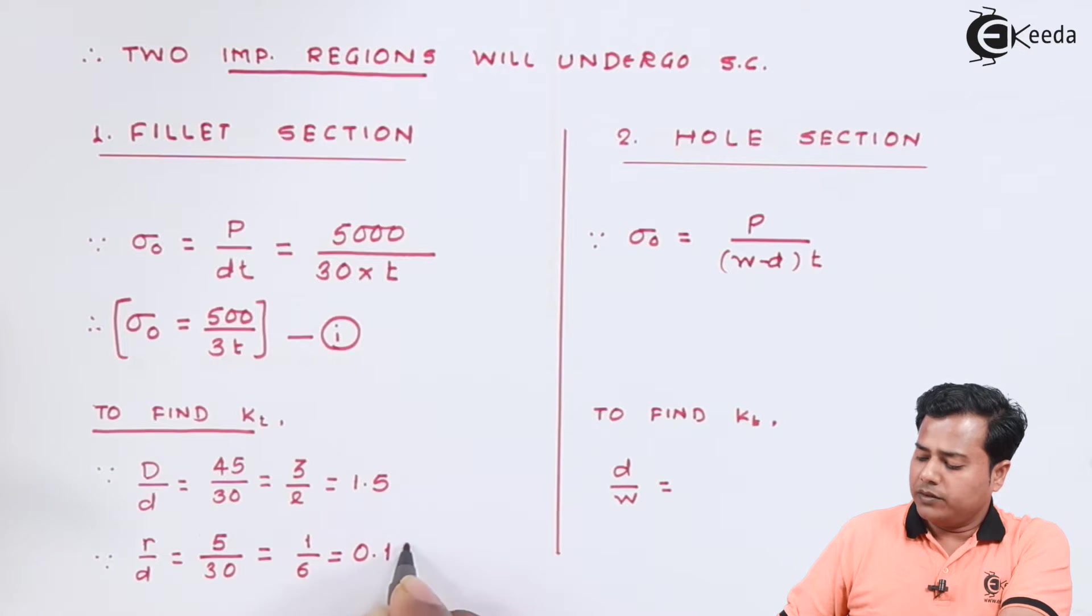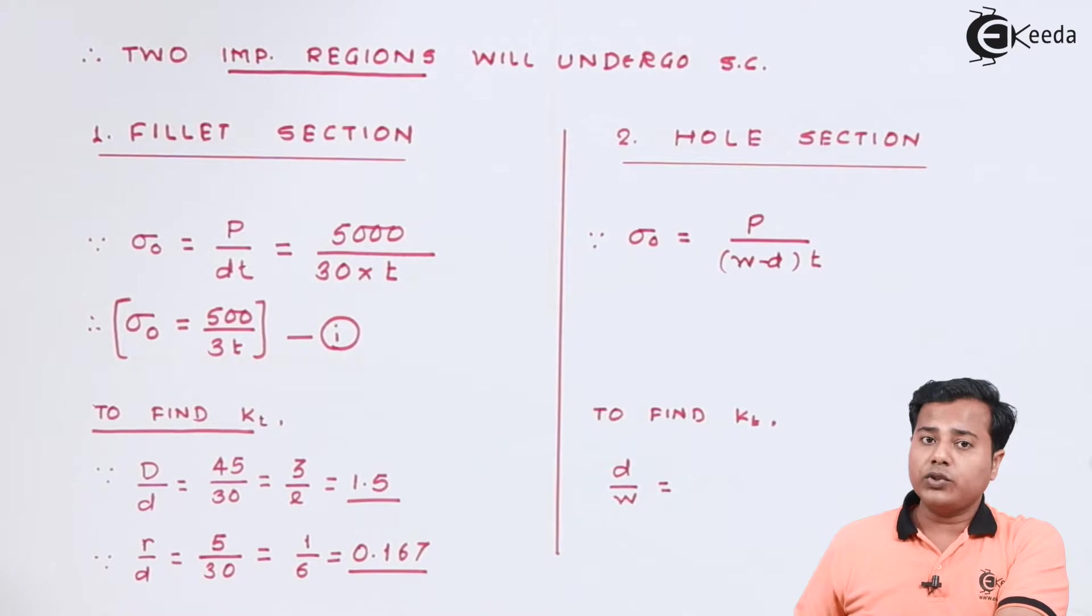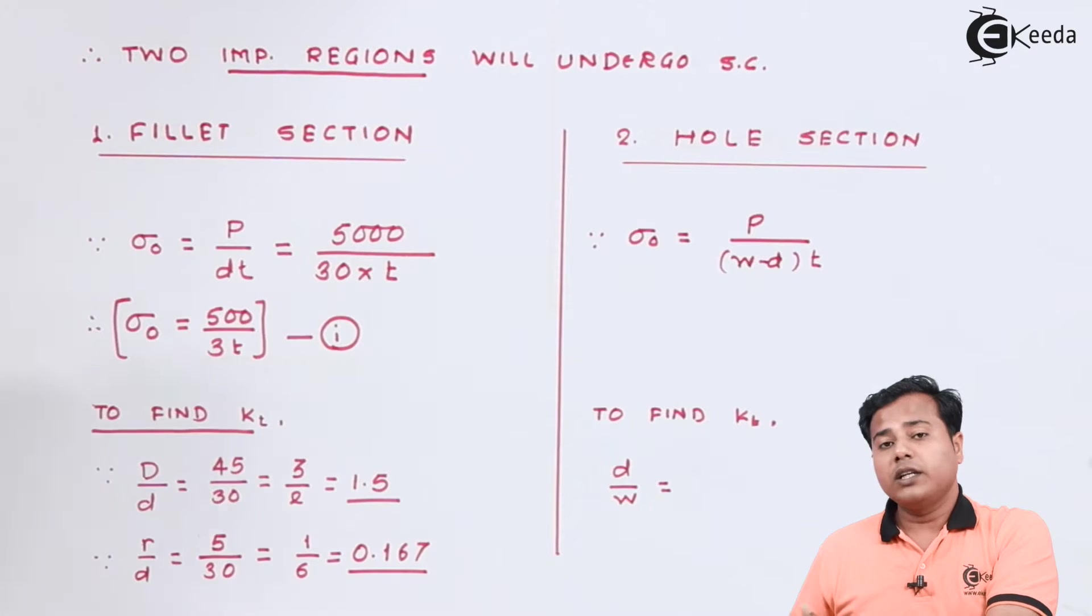Now using these two ratios we are going to evaluate the kt factor. Before that let us switch our role to the hole section.